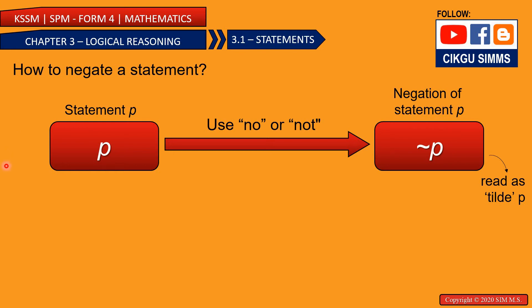Let's see some examples. So first, 80 is a multiple of 10. If you want to negate this statement, you can use the word no or not. Let's see the answer. So 80 is not a multiple of 10.